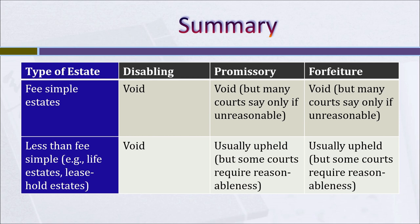Here's a summary chart. Disabling restraints are void whether on a fee simple estate or on an estate less than a fee simple. For promissory or forfeiture restraints on a fee simple, many courts hold them void, while others say they're void only if unreasonable — so courts may or may not evaluate reasonableness. For promissory or forfeiture restraints on estates less than a fee simple — life estates or leaseholds — they're nearly always upheld, though a court might occasionally inquire into reasonableness and strike one down.